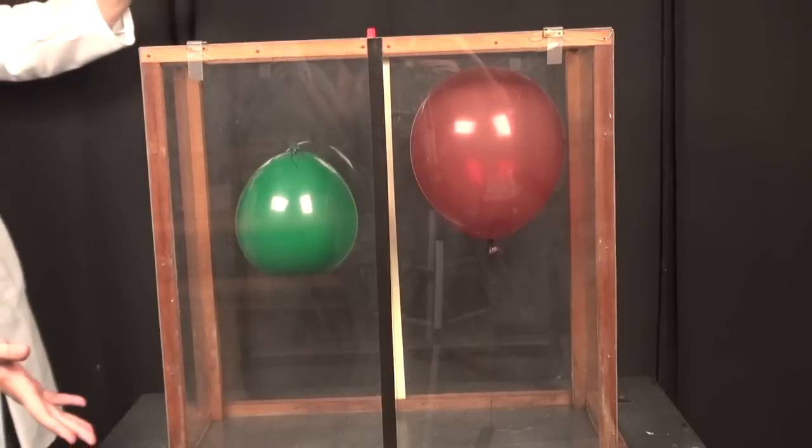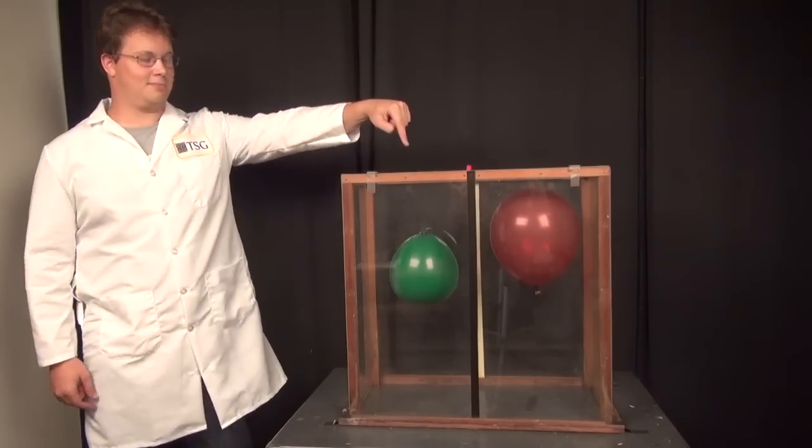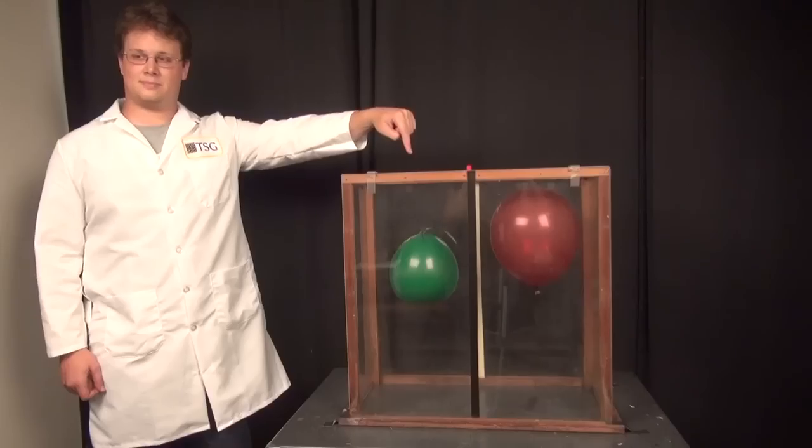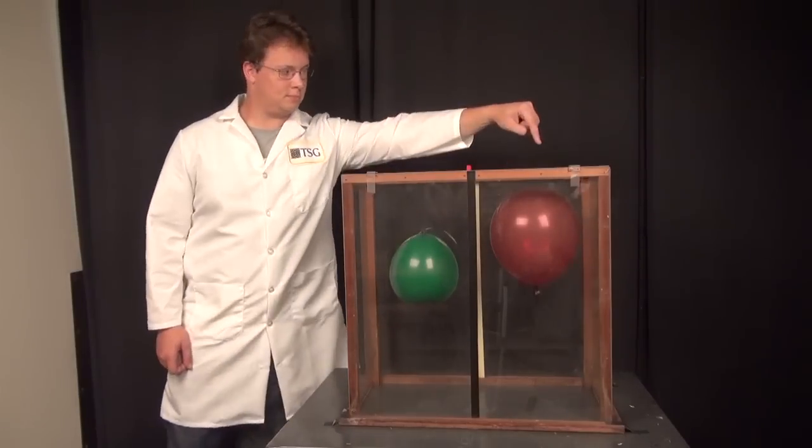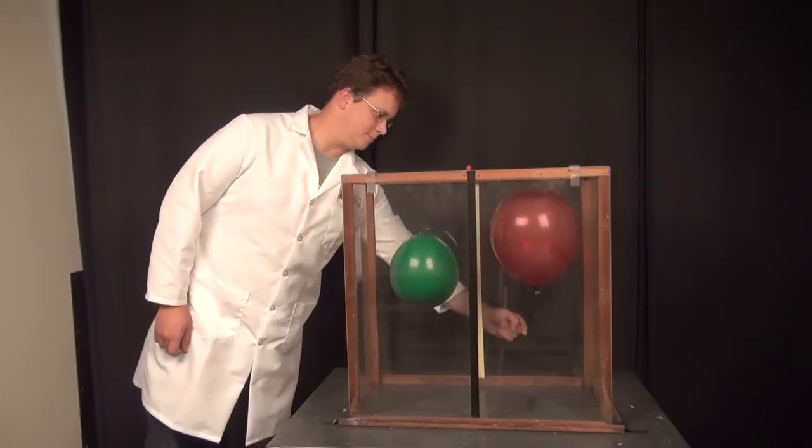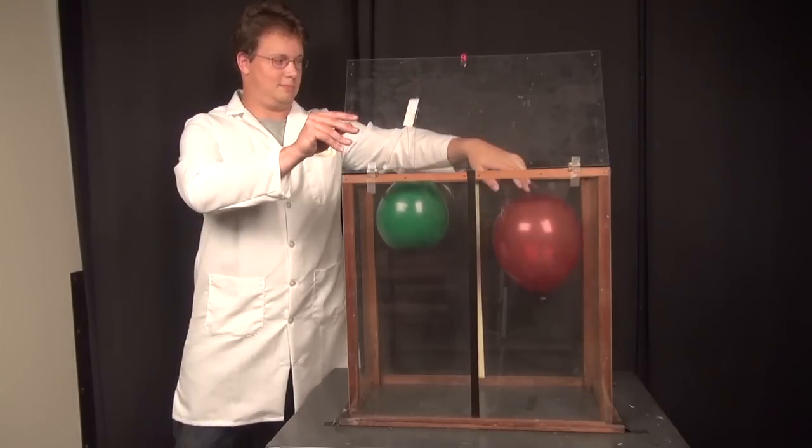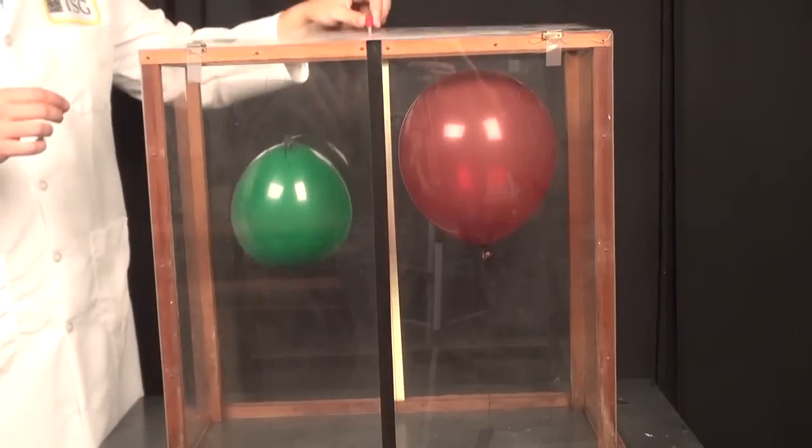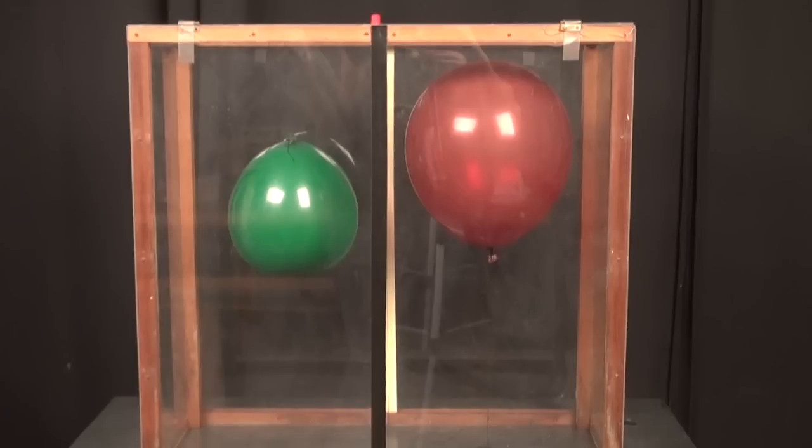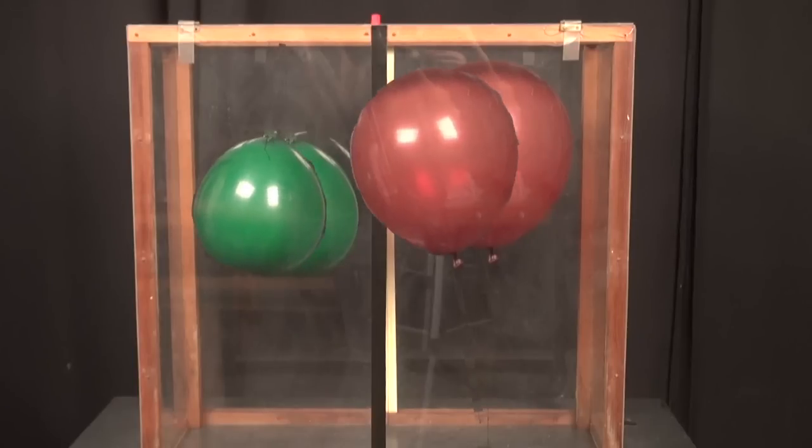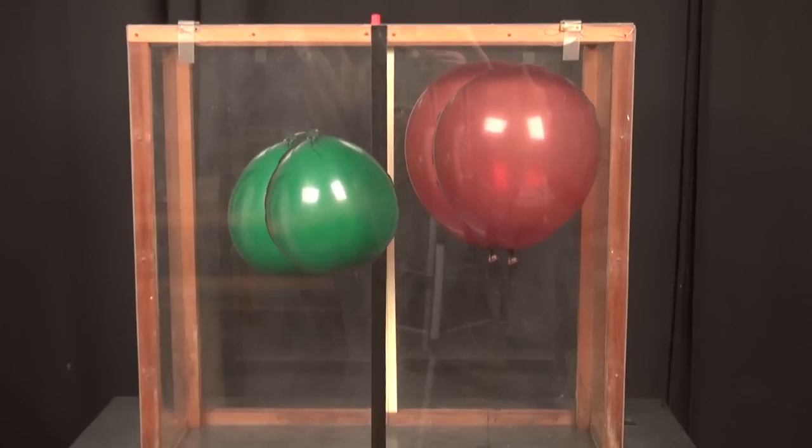He has placed two balloons in a box. One balloon is filled with air and is hanging from the top of the box. The other is filled with helium and is taped to the bottom of the box. The box is loosely closed and therefore filled with air. Dan is going to give the box a push and we'll see which way the balloons will move inside the box. Will they move backwards or forwards? Let's see.